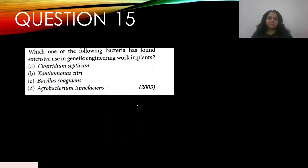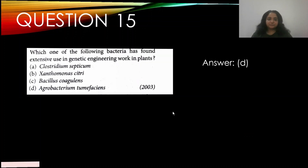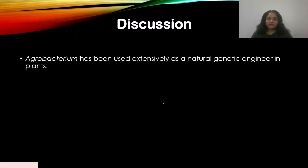Question 15: Which one of the following bacteria has found extensive use in genetic engineering work in plants? This appeared in 2003. Agrobacterium is a recurring and very important topic that keeps appearing in NEET — study it carefully. The answer is D — Agrobacterium, which has been used extensively as a natural genetic engineer in plants.